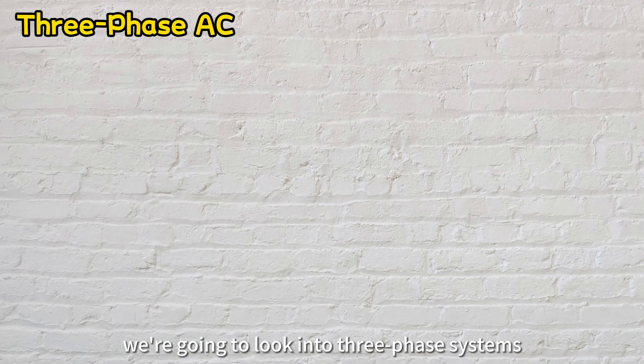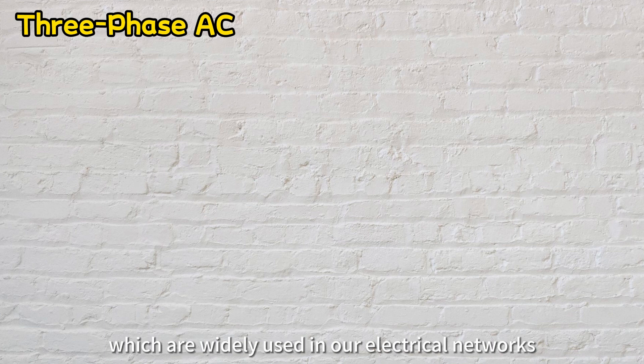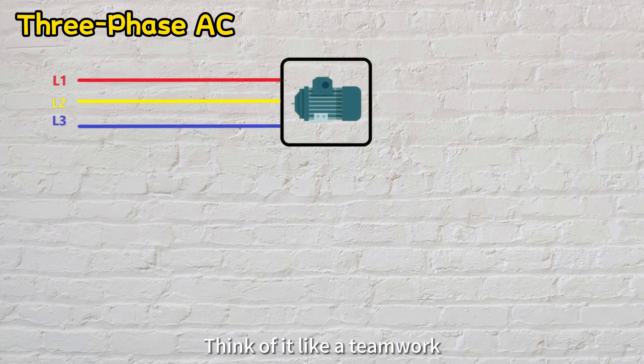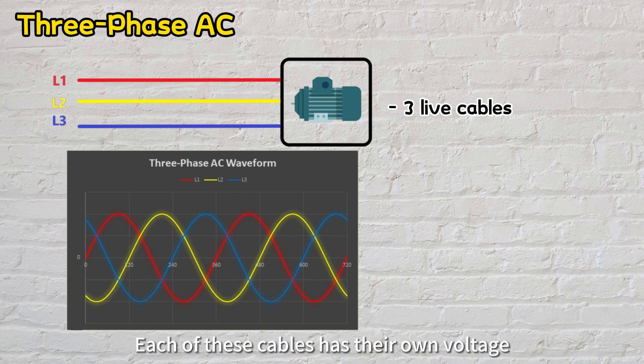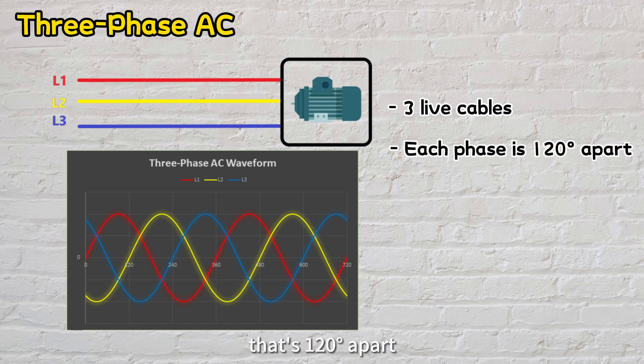Now, let's take a step further. We're going to look into three-phase systems, which are widely used in our electrical networks. Think of it like teamwork - there are three separate live cables delivering power to devices. Each of these cables has their own voltage that's 120 degrees apart, and they all work at the same frequency.